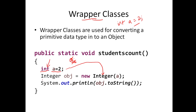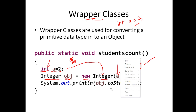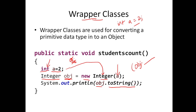The Integer class is a built-in wrapper class in Java. You can create an object like: 'Integer object = new Integer(primitiveValue)'. Now this object takes the value 2, and you can call methods on it. For example, 'object.toString()' takes the integer value and converts it to a string.